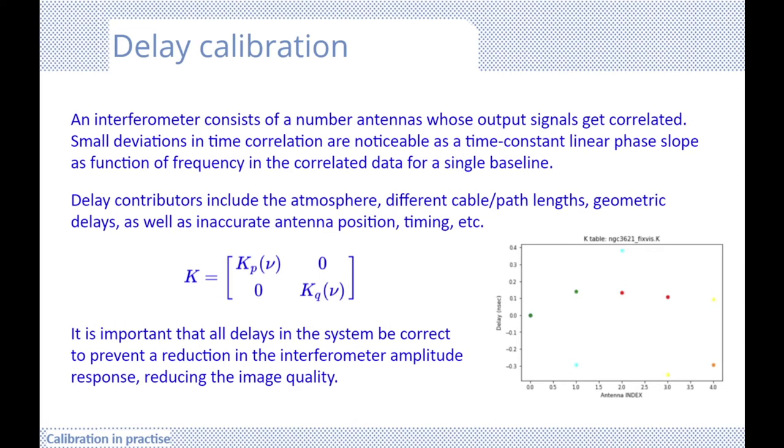It is thus important that all delays in the system be corrected to prevent a reduction in the interferometer amplitude response, thereby reducing our image quality. Contributors to these delays between signals include the atmosphere, different cable lengths, path delays, geometric delays, as well as inaccurate antenna positions and timing errors.